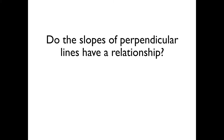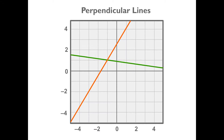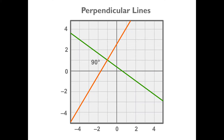Do the slopes of perpendicular lines have a relationship? Yes, there's also a relationship between the slopes of two perpendicular lines. Begin with two intersecting lines and rotate one of them until the angle at the point of intersection is 90 degrees, or a right angle. These two lines are now perpendicular.